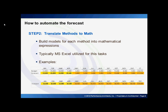Once you have determined what calculation methods are required, you are ready to translate these methods into mathematical expressions. This is an opportunity to proof your methods and show that they can be mathematically derived. In these examples, the yellow represents actual data and the orange represents the forecasting periods. The first example shows the budget dollars for the year and how the budget is simply dropped into the out months of the forecast. The second example averages the dollars for the in months and then puts the average into each of the out month periods.